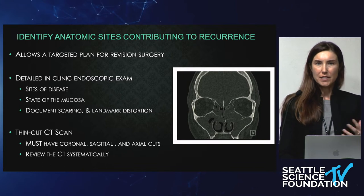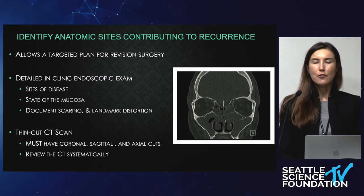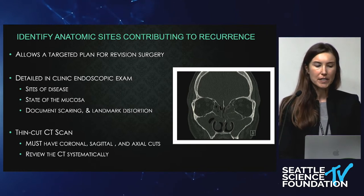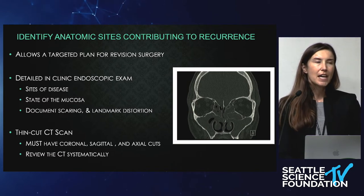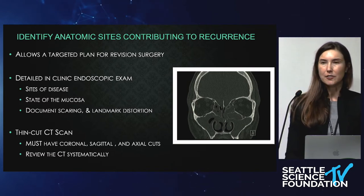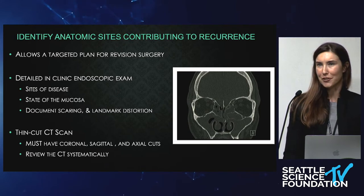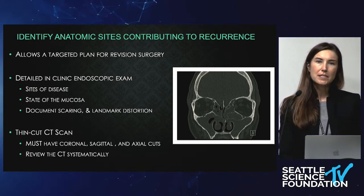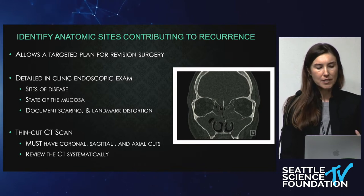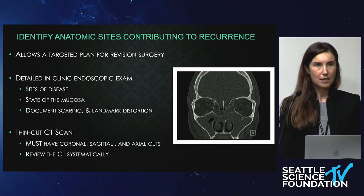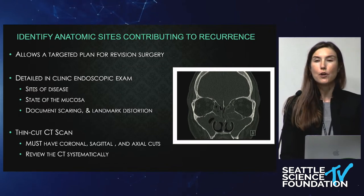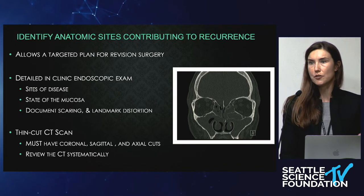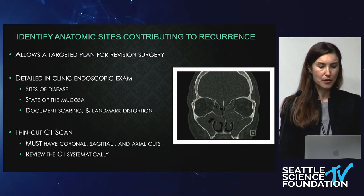I'm going to talk about a systematic process of how you're going to approach these patients. The first thing is to identify anatomic sites that are contributing to recurrence — this allows a targeted plan for revision surgery. You want to get a detailed clinical endoscopic exam, which tells you about the sites of the disease and the state of the mucosa, and it's going to help you document scarring and landmark distortion so that when you go into surgery you're not surprised and are able to create a plan before you end up in the operating room.